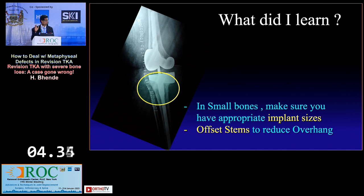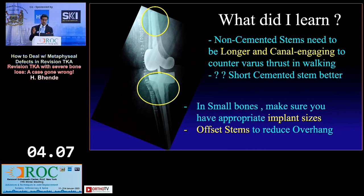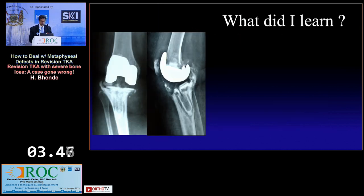I learned that with small bones you must have appropriately sized implants — if you don't, it is difficult to do the surgery properly. We need offset stems to reduce overhang on the bone. Today we have offset stems in various options — three millimeter or six millimeter — which can rotate around the clock, allowing us to place the implant on available bone. Non-cemented stems should be longer and canal-engaging for more rigid fixation. In this case, short cemented stems might have been better given the patient's age and osteoporotic bones.